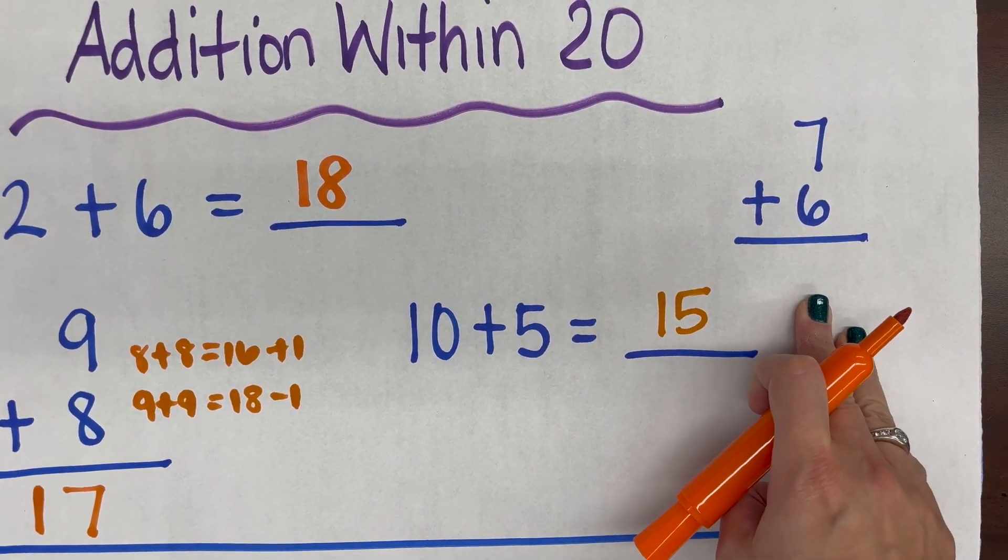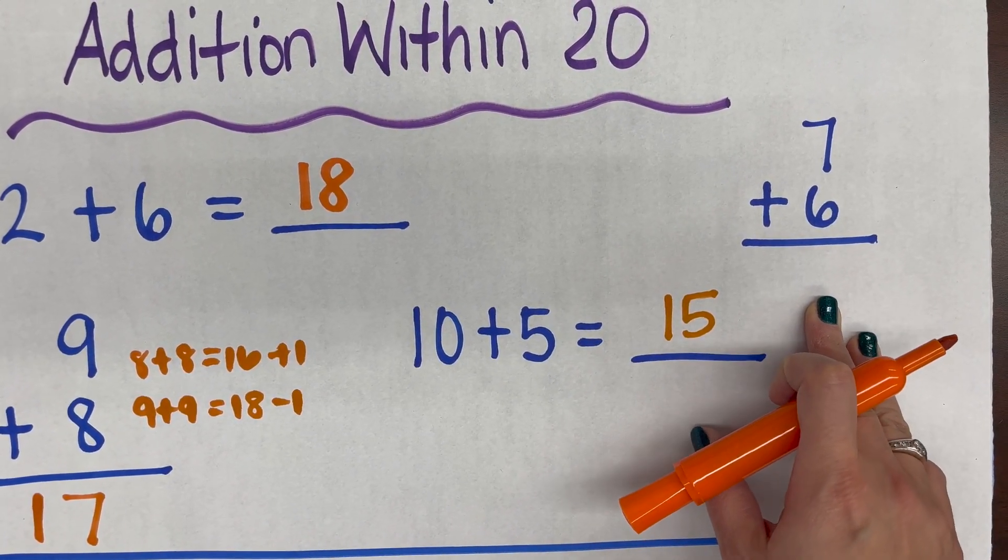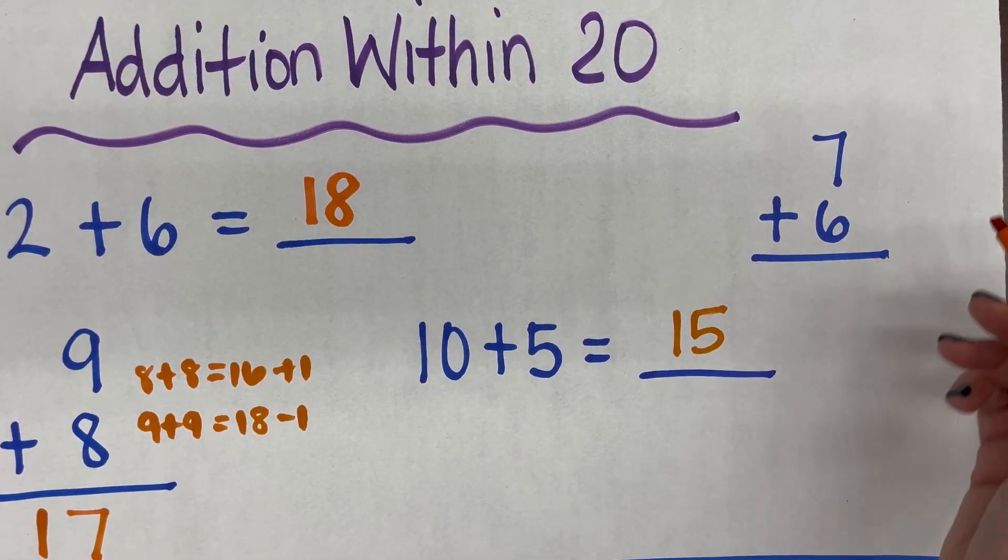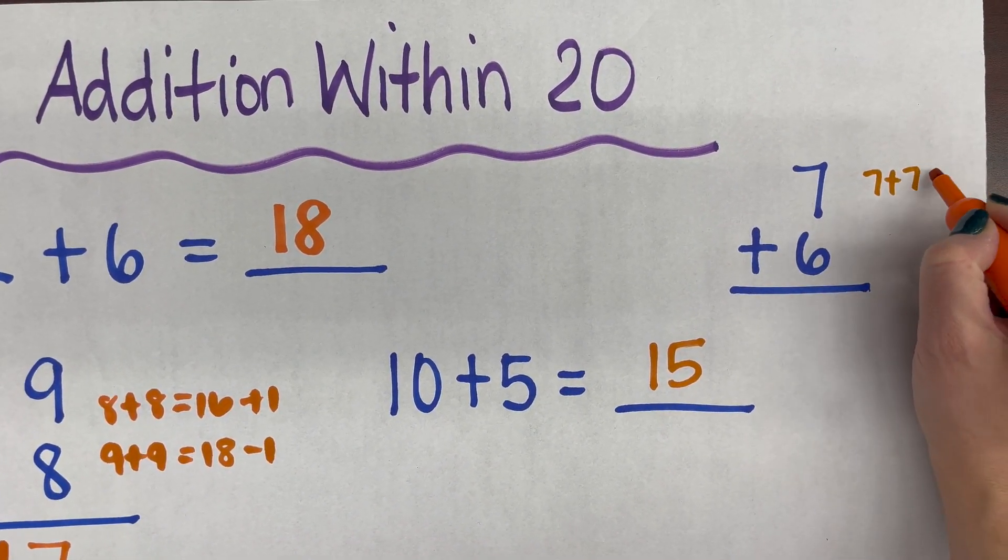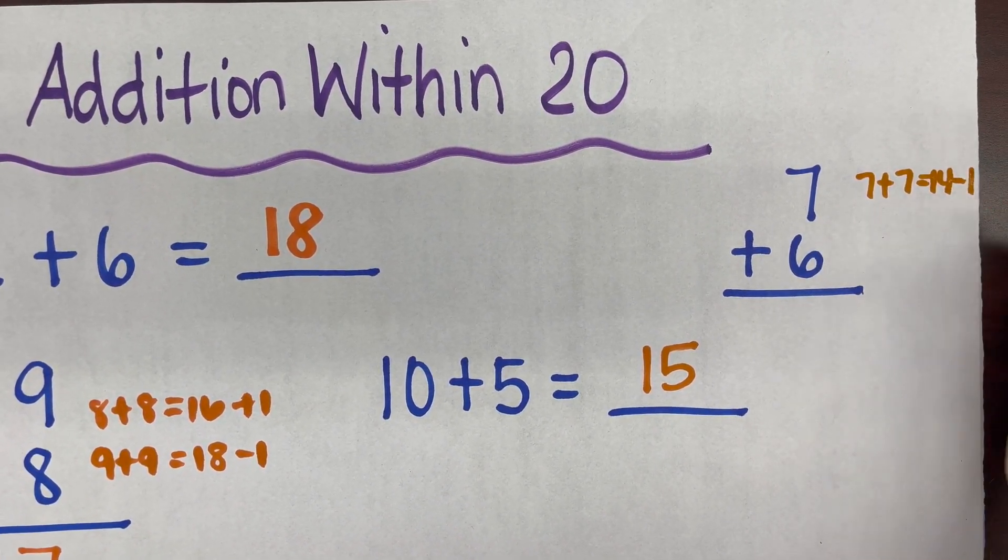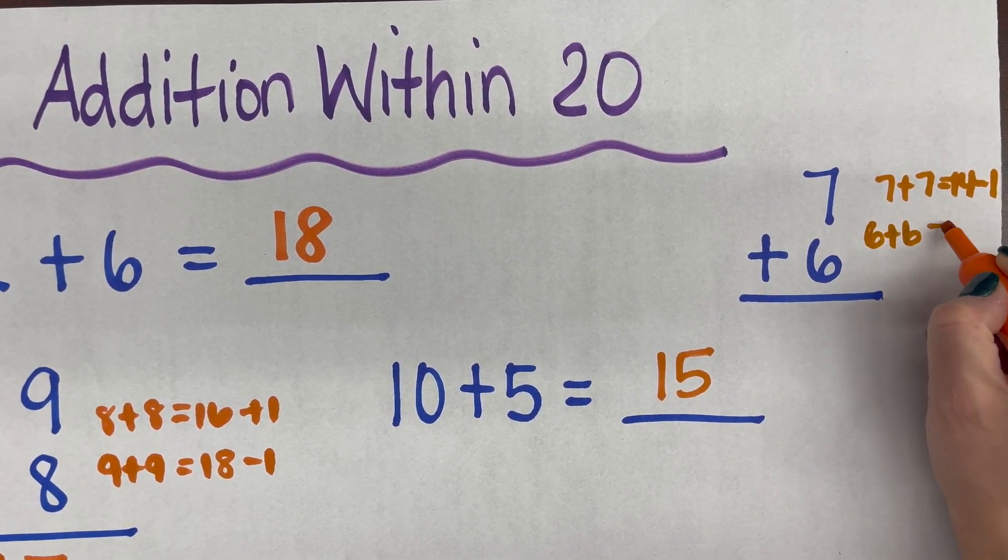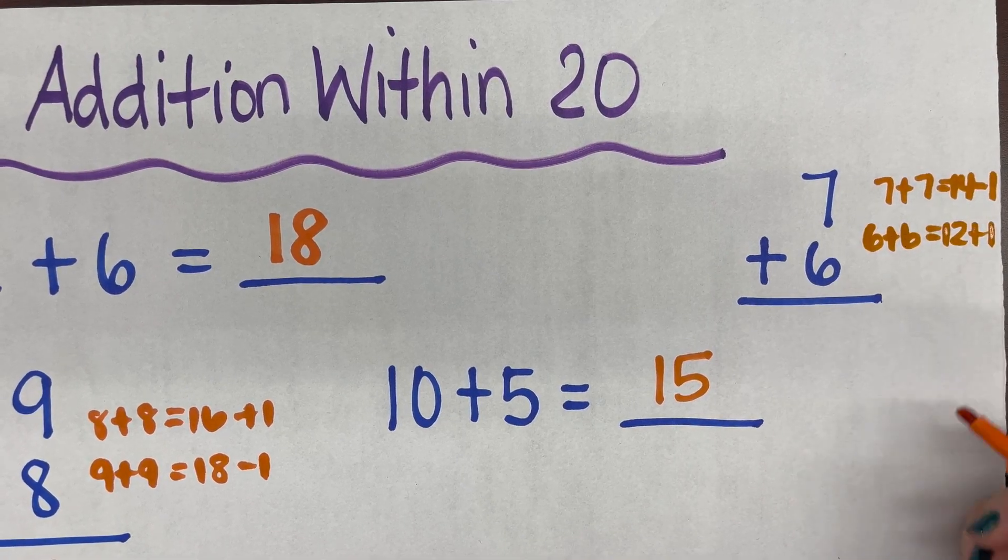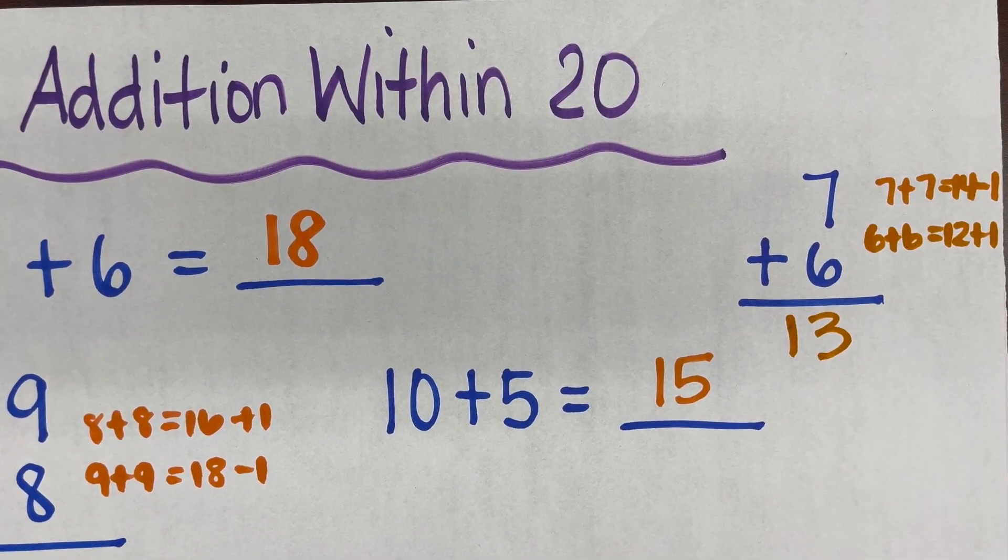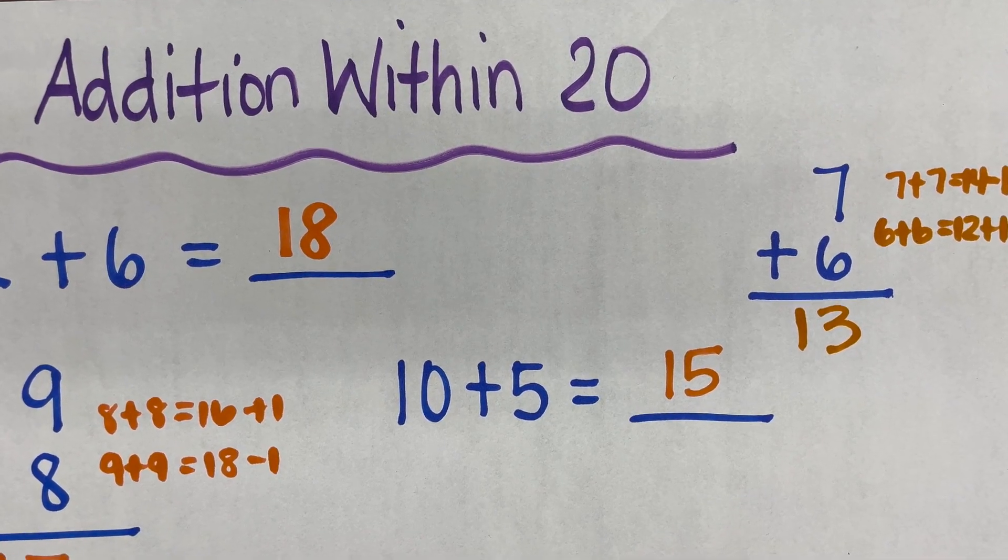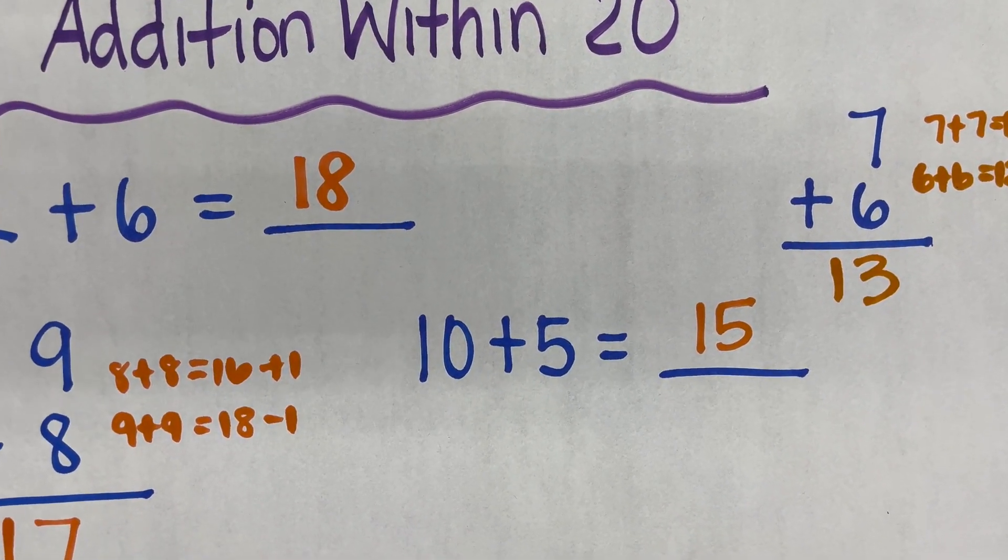Another example would be 7 plus 6. I can use the same related fact example that I did for 9 plus 8. 7 plus 7 is 14 minus 1 would be 13, or 6 plus 6 equals 12 plus 1 more would give me 13. So these are some examples of how you could support computation at home for second graders.